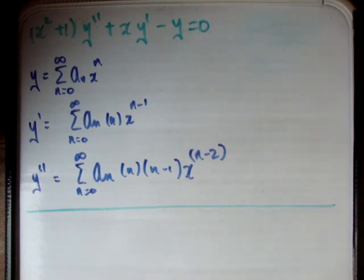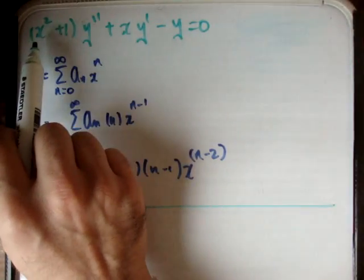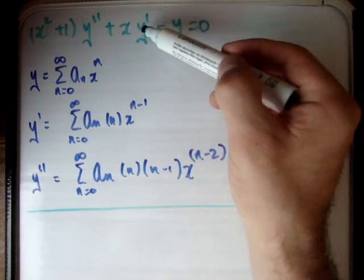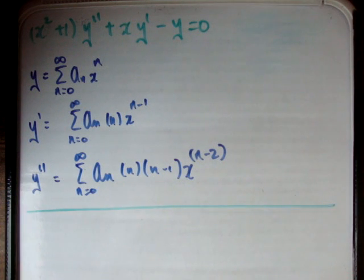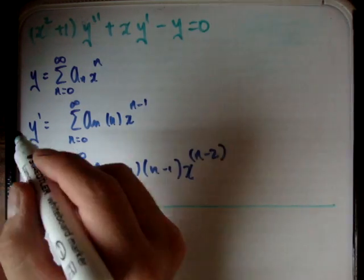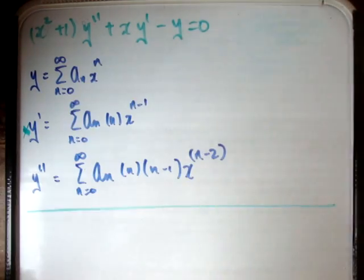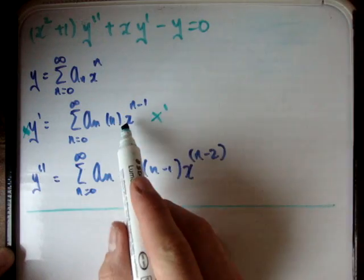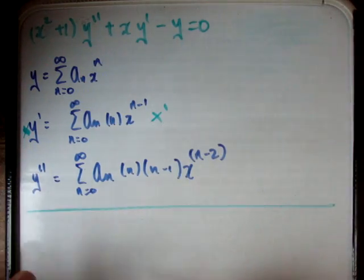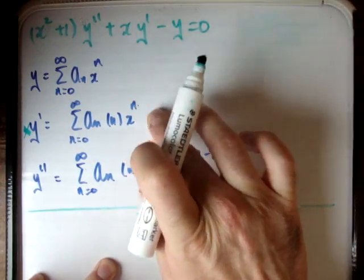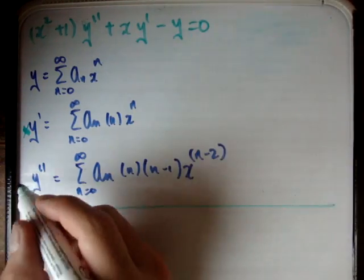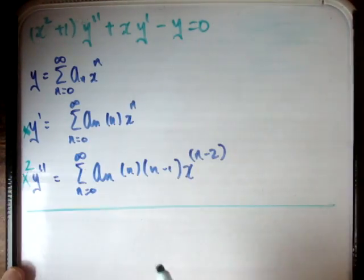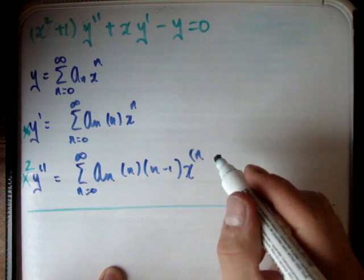The next thing we need to do is note the fact that y double prime is multiplied by both x squared and 1, and y prime is multiplied by x. What we need to do now is basically multiply those in. So let's multiply x times y prime — that becomes an x to 1 out here, and we have x to the n minus 1 times x to the 1, which basically cancels the 1. And similarly we have an x squared here, and we can get rid of this as a result.